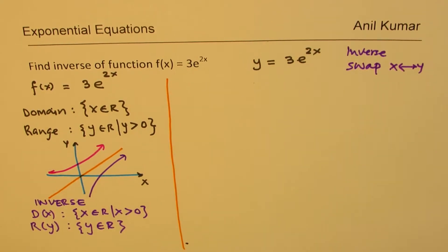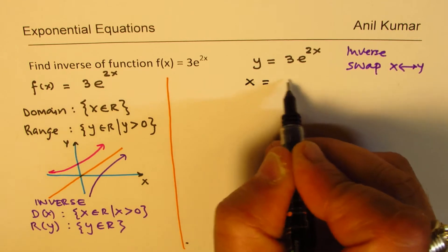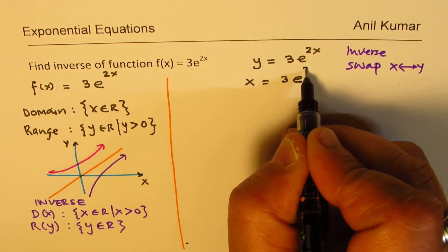So, x becomes y, y becomes x. So, we write like this: x equals 3e to the power of 2y.